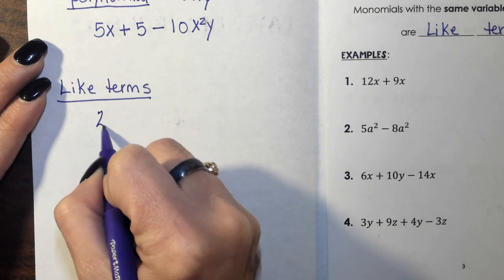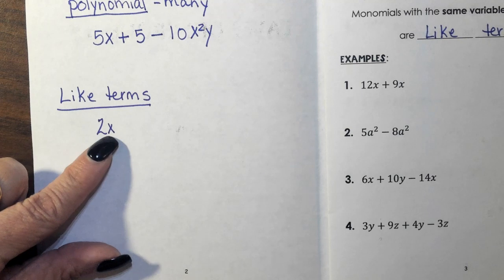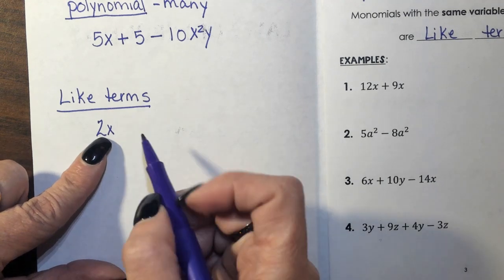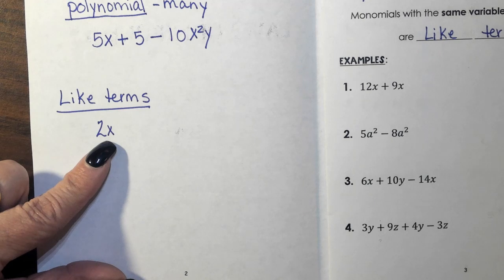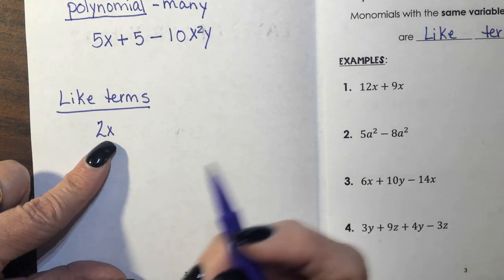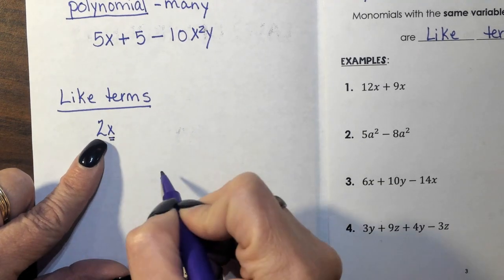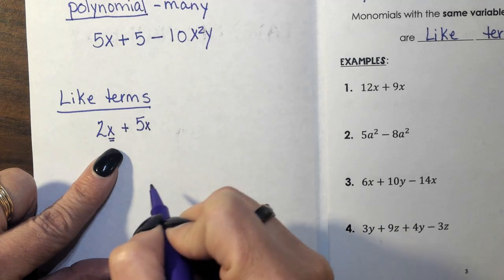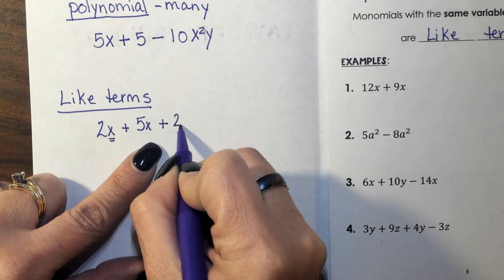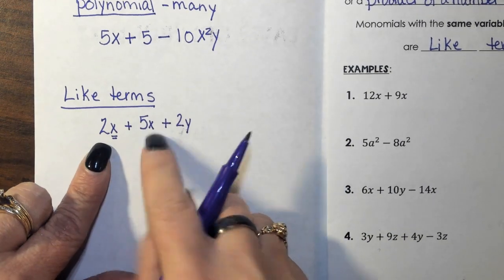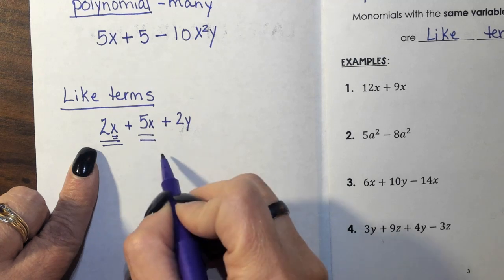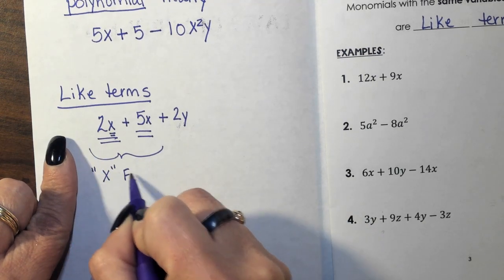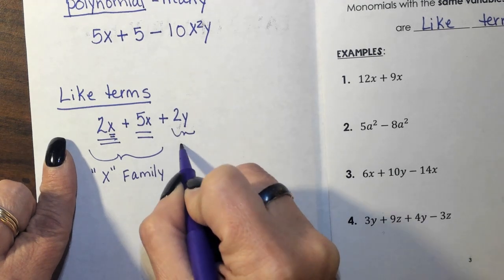If I have 2x, this is what I'm going to call the x family. Now everybody has a last name — you can't get away from it. The last name of this family is the x family. And if I want to put it together with somebody else in the family, the last name would have to be x. If I tried to say 2y — this is the y family; these are the x family. I can put these guys together because they're in the same family. This is the x family; this right here is the y family.